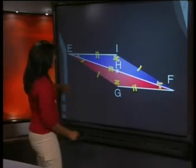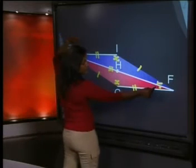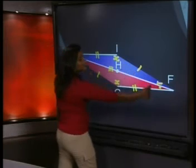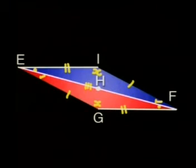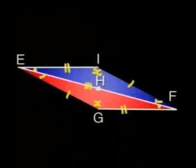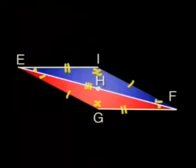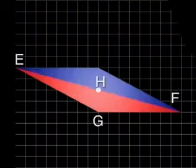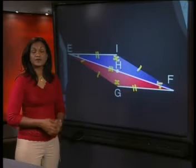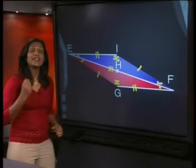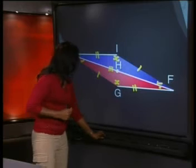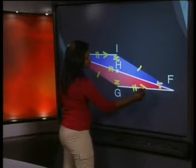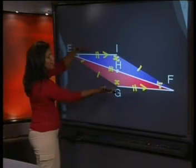If this angle is equal to this angle, then we can show that EI is parallel to GF. Are these two angles equal? Let's rotate the triangle again to check. Yes, they are. So EI is parallel to FG, and we mark it like this. They are parallel to each other.